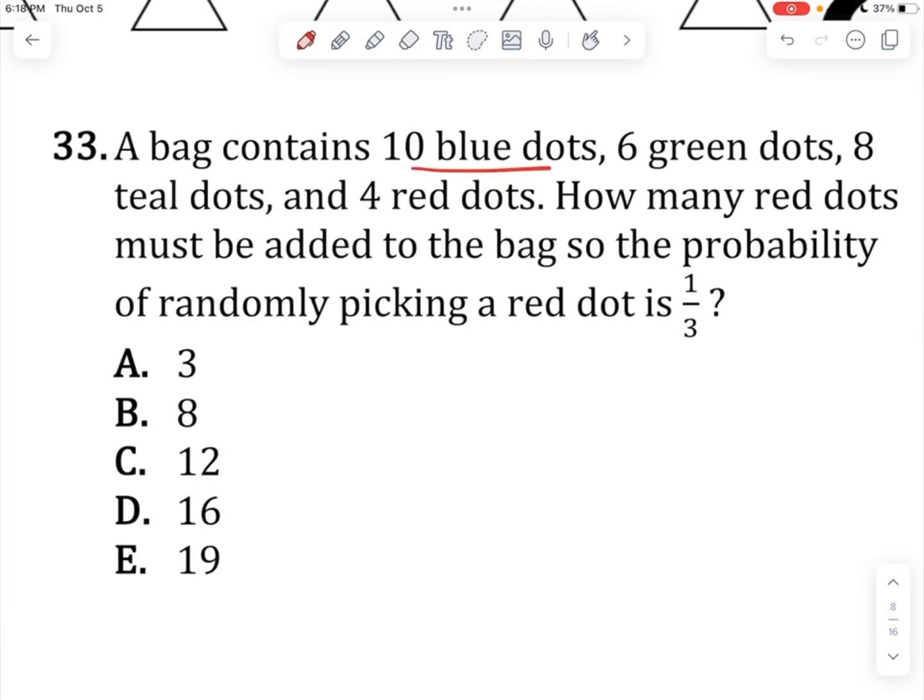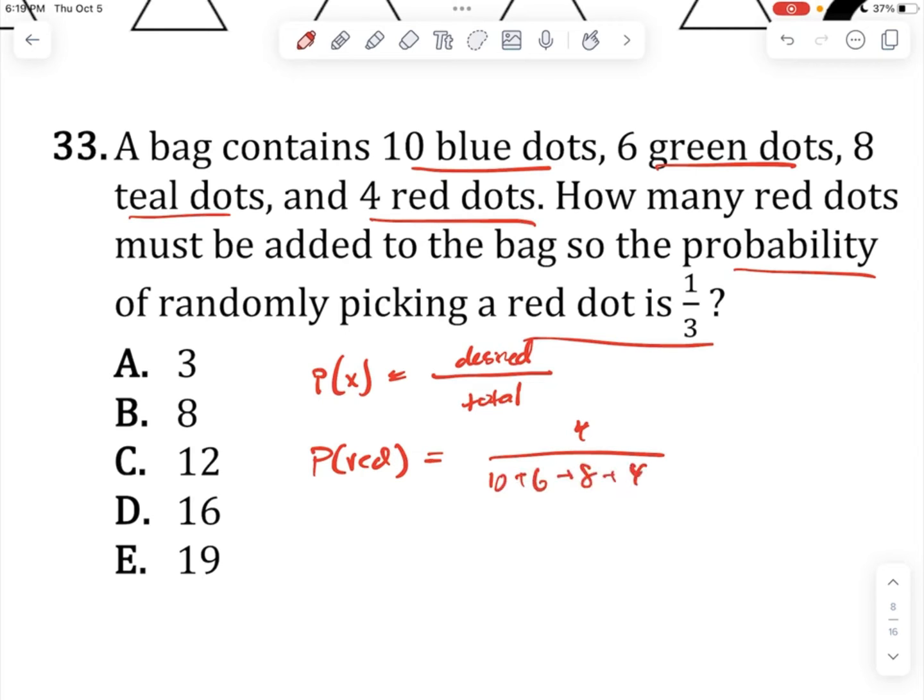A bag contains 10 blue dots, 6 green dots, 8 teal dots, and 4 red dots. How many red dots must be added so the probability of randomly picking a red dot is 1 over 3? Let's plug in the probability formula: desired outcomes divided by total outcomes. Currently we have 4 red out of 28 total, which equals 1 out of 7. We want to increase that to 1 out of 3.